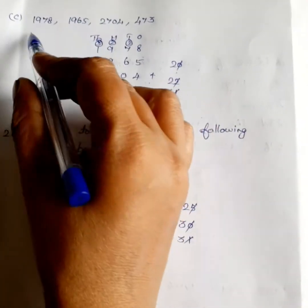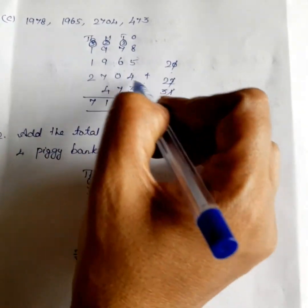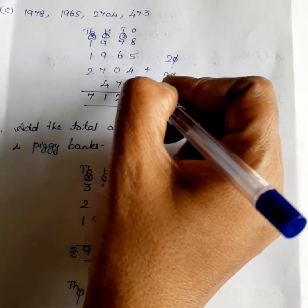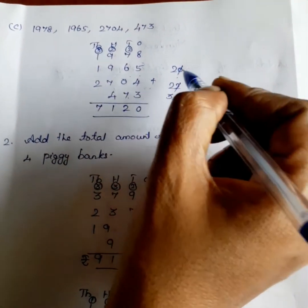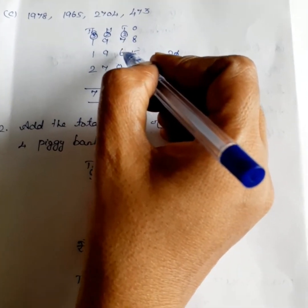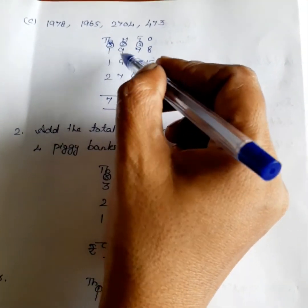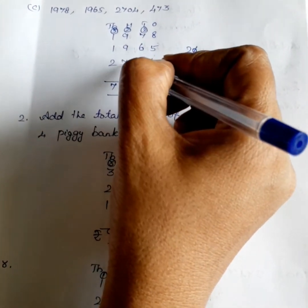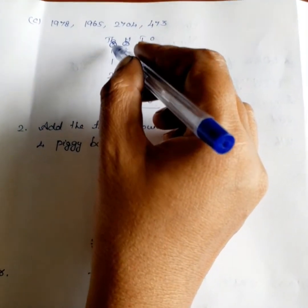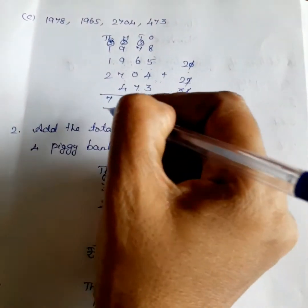Next sum: 1,970, 1,965, 2,704, 473. 8 plus 5 is equal to 13. 13 plus 4 is equal to 17. 17 plus 3 is equal to 20. Remaining 2. 2 plus 7 is equal to 9. 9 plus 6 is equal to 15. 15 plus 7 is equal to 22. Remaining 2. 2 plus 9 is equal to 11. 11 plus 9 is equal to 20. 20 plus 7 is equal to 27. 27 plus 4 is equal to 31. Remaining 3. 3 plus 1 is equal to 4. 4 plus 1 is equal to 5. 5 plus 2 is equal to 7. Answer: 7,120.